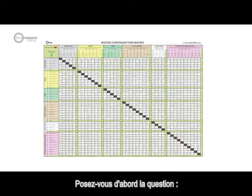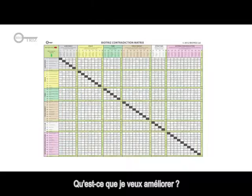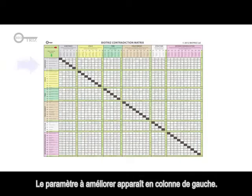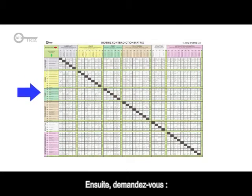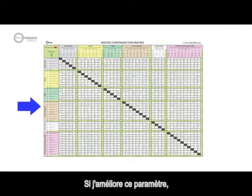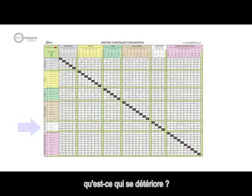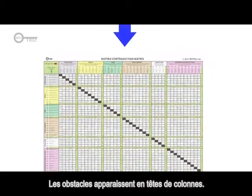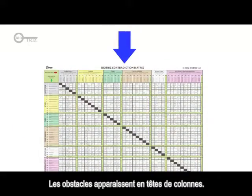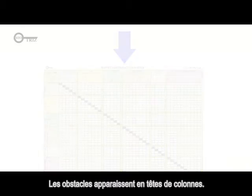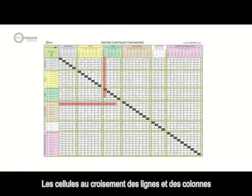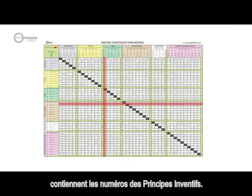First, ask yourself: what do I want to improve or achieve? The features we want to improve are presented in the rows of the contradiction matrix. Secondly, ask yourself: if I improve this parameter, what gets worse? The features that create obstacles to improvement are presented in the columns of the table. The crossings of rows and columns gives us the cells with the numbers of the inventive principles.